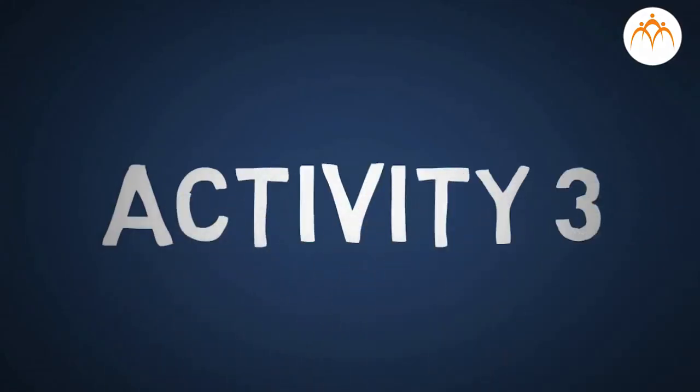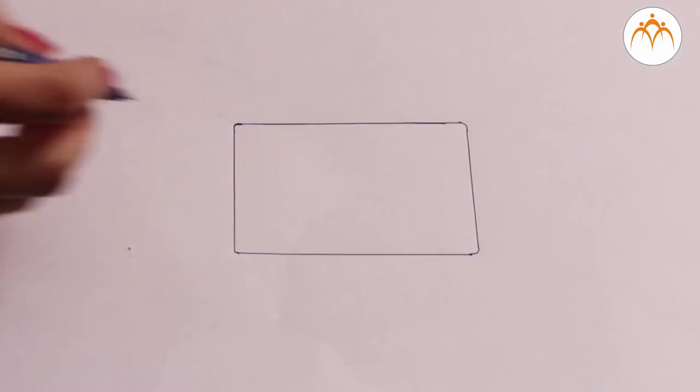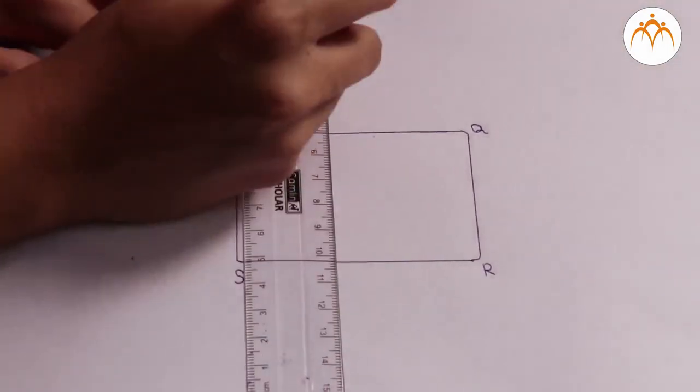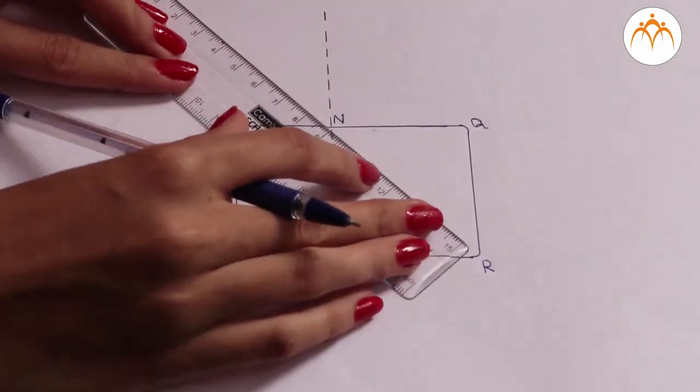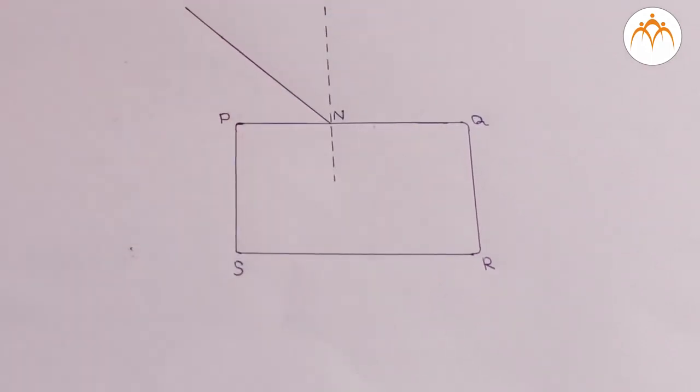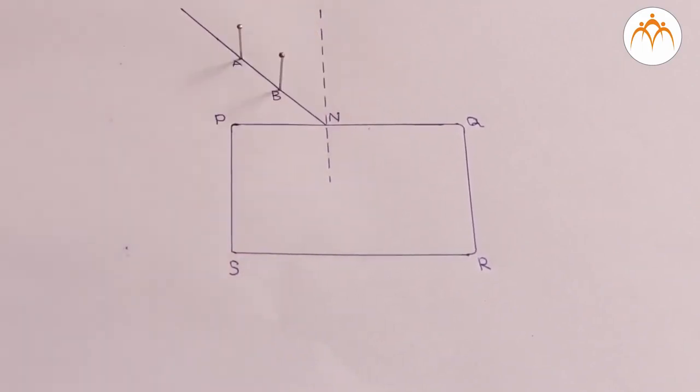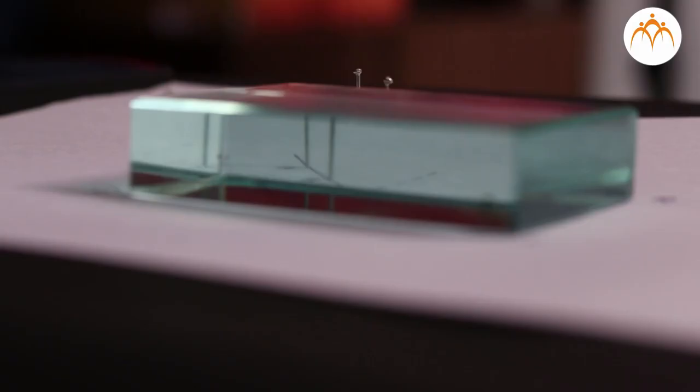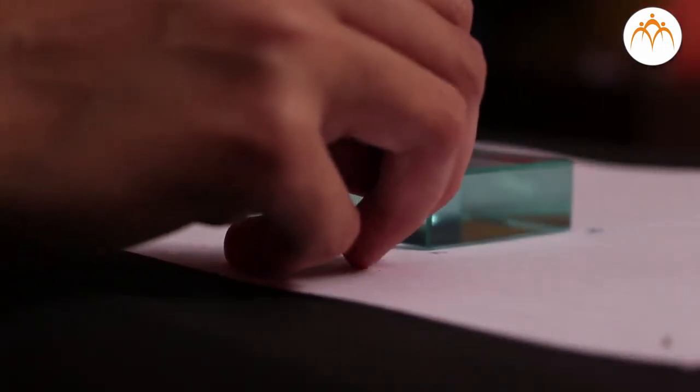Let us now do the experiment described as activity three in the textbook. Keep a glass slab on a blank paper and draw its outline PQRS. Draw an inclined straight line on the side PQ so that it intersects PQ at N. Pierce two pins vertically at two points A and B along this line.